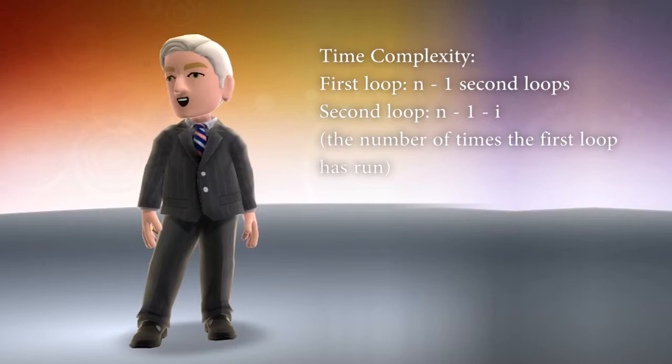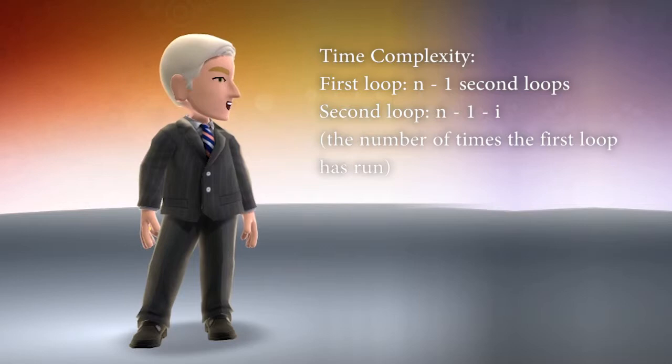Now, we look at the time complexity of this algorithm. Time is pretty complex. It even confuses me sometimes. Now, we're going through this first loop n minus one times, and then the second loop n minus one minus i times, where i is the number of times the first loop has run.